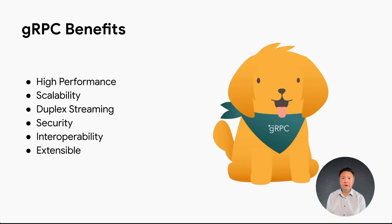Here are some of the benefits of gRPC. First, it offers high performance — gRPC is designed for low latency and high throughput communications. Next, gRPC is designed to be scalable, meaning you can use gRPC to communicate with a large number of services without impacting performance. gRPC supports duplex streaming, which allows for more efficient communications as data can be forwarded as a stream is being generated. Security is front and center, since gRPC supports features such as TLS encryption and authentication. gRPC implementations can interoperate even if written in different programming languages and running on different platforms. Finally, gRPC is extensible — you can add new features and functionality by writing plugins.